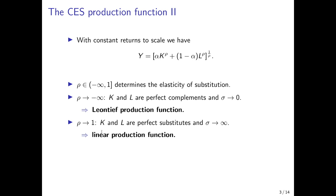If rho tends to 1, the elasticity of substitution between capital and labor tends to infinity, which means capital and labor are perfect substitutes. In this case, we have a linear production function and can substitute capital for labor perfectly.